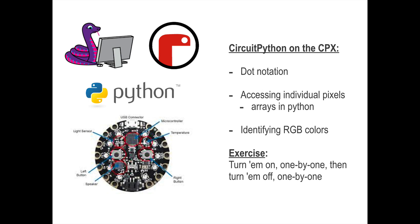Hello friends, it's time to do a little bit more CircuitPython programming on the CPX. In this video, we're going to learn about dot notation and how we can access and change the color on individual NeoPixels. They're referred to as the pixels — those are the 10 little lights that exist on the CPX.